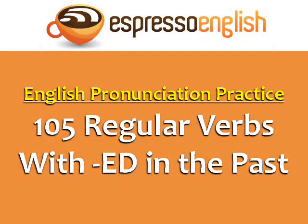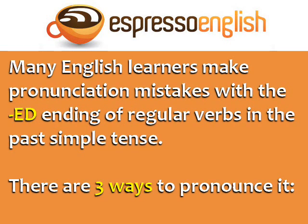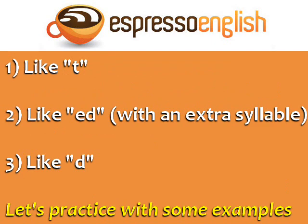English Pronunciation Practice: 105 Regular Verbs with ED in the Past, from EspressoEnglish.net. Many English learners make pronunciation mistakes with the ED ending of regular verbs in the past simple tense. There are three ways to pronounce ED in English: like T, like ED with an extra syllable, and like D. Let's practice with some examples.